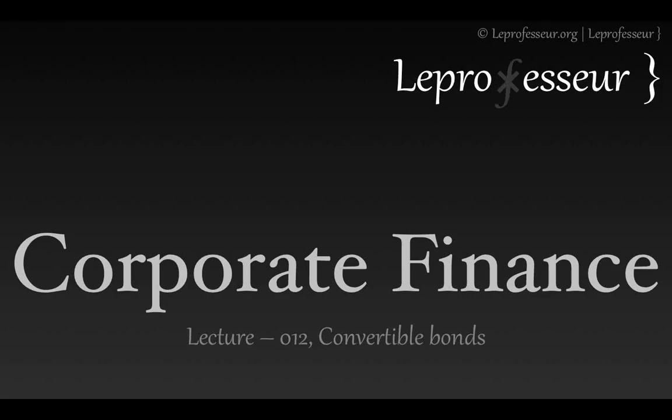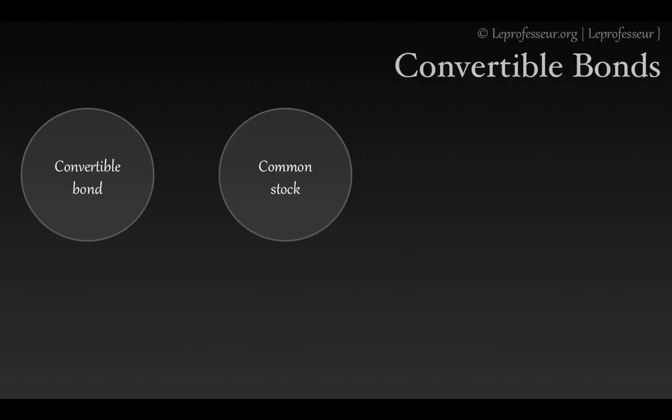In this lecture we're going to be discussing convertible bonds. Companies need to accumulate assets and increase their asset base, and for that they need capital. To raise money, they issue different kinds of securities — stocks, bonds, convertible bonds, and warrants.